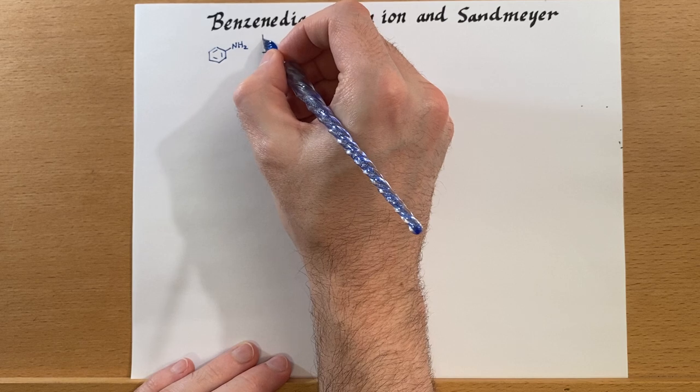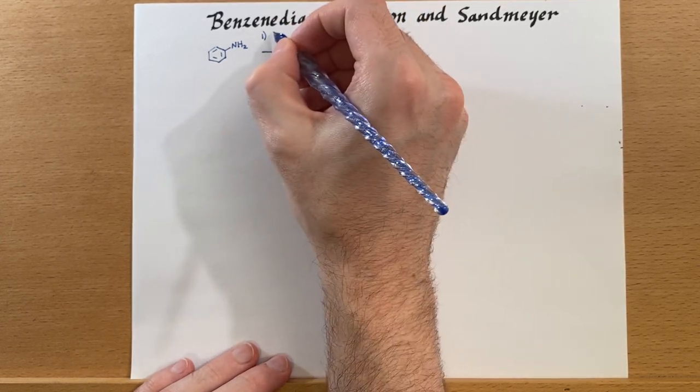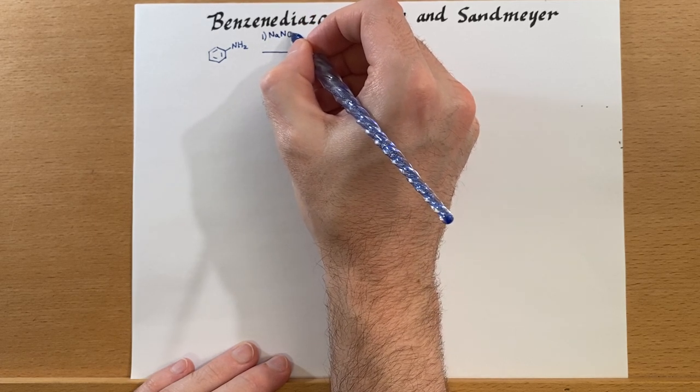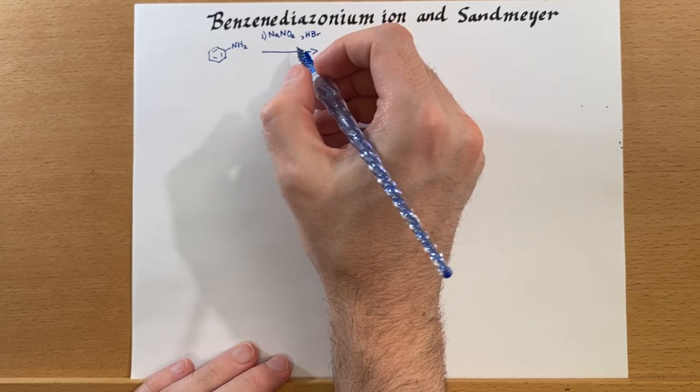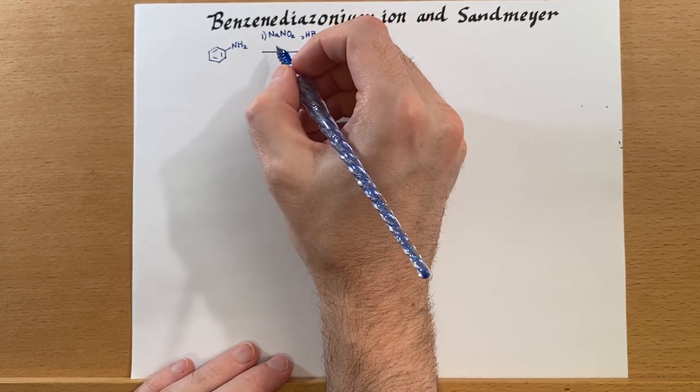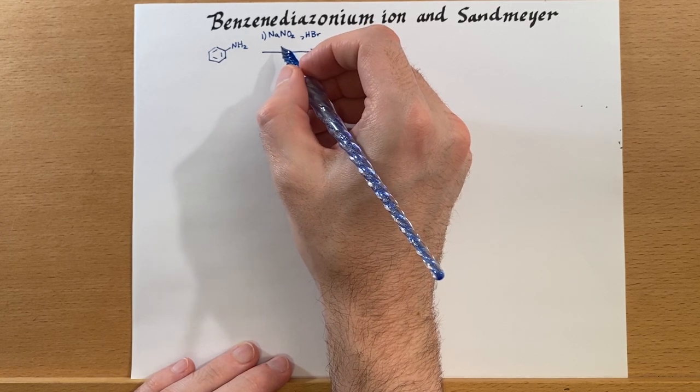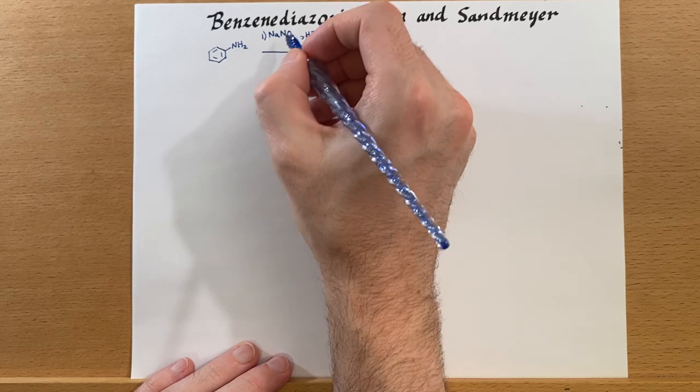So step one is going to generate the benzene diazonium ion. And we'll need to do this at a reduced temperature, somewhere below 10 degrees Celsius. I would err on the side of closer to zero.